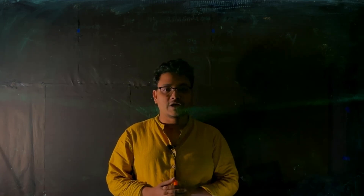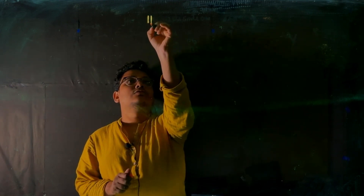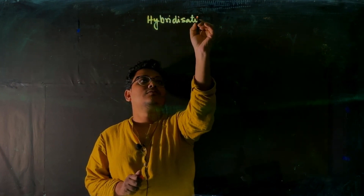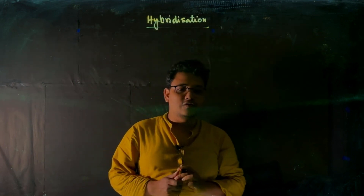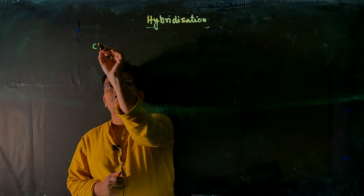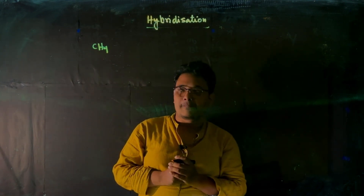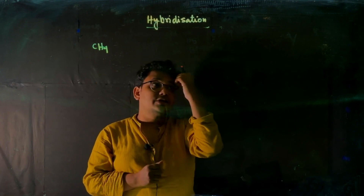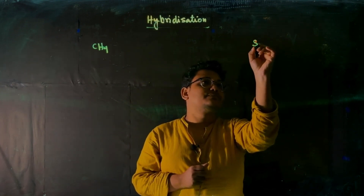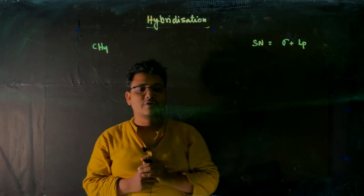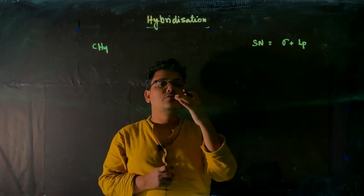Hello everyone, welcome to Meta Care. In this video we will see a quick trick to find out the hybridization of central atoms. Let us consider CH₄ first, where we have to find out the hybridization of the carbon central atom. First, we have to check the steric number. The steric number is the number of sigma bonds plus lone pairs.